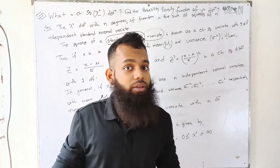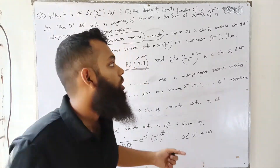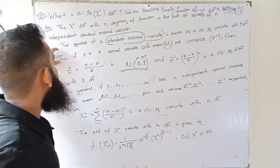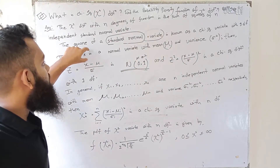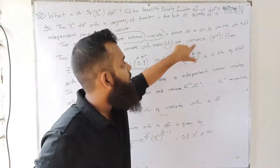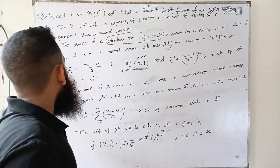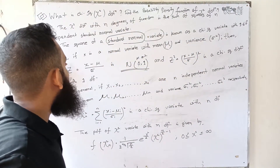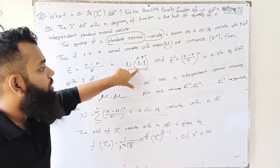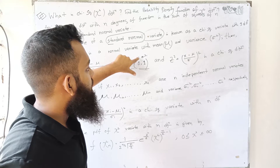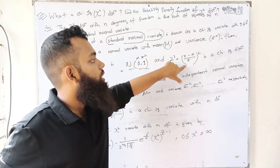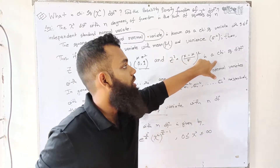What is the Chi-square distribution? What is the Chi-square variate with one degree of freedom? If x is a normal variate with mean mu and variance sigma squared, then z = (x minus mu) divided by sigma is the standard normal distribution with mean zero and variance one. And z squared = (x minus mu divided by sigma) whole squared is a Chi-square distribution.